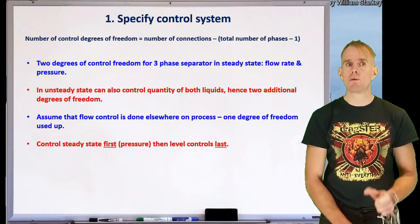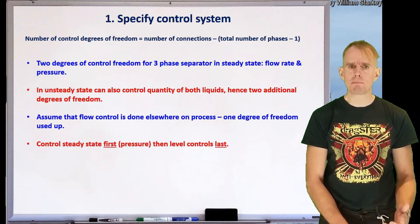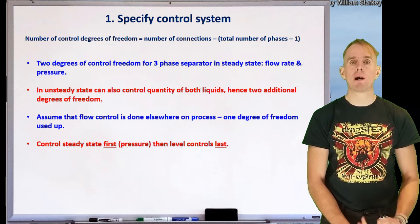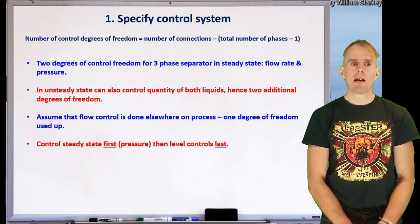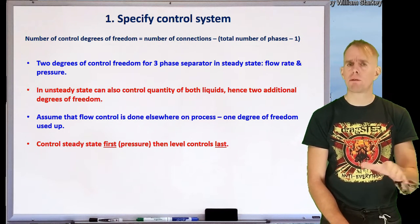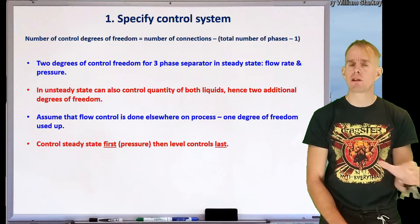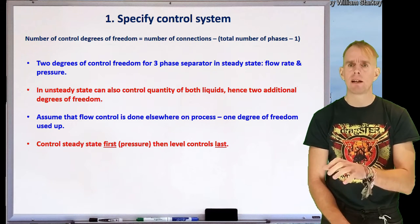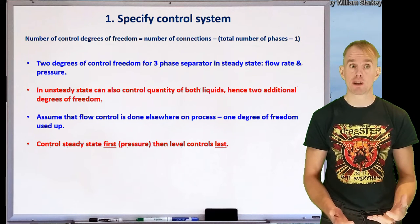That leaves us with two degrees of control freedom for steady state: flow rate and pressure. We haven't got temperature because there's no way of heating or cooling the contents of the separator. And if we consider flow rate, we may have already controlled that elsewhere on plant, because for the major process flow through a plant you only control it in one place — otherwise multiple controllers on the same line end up fighting each other and the control system simply won't work.